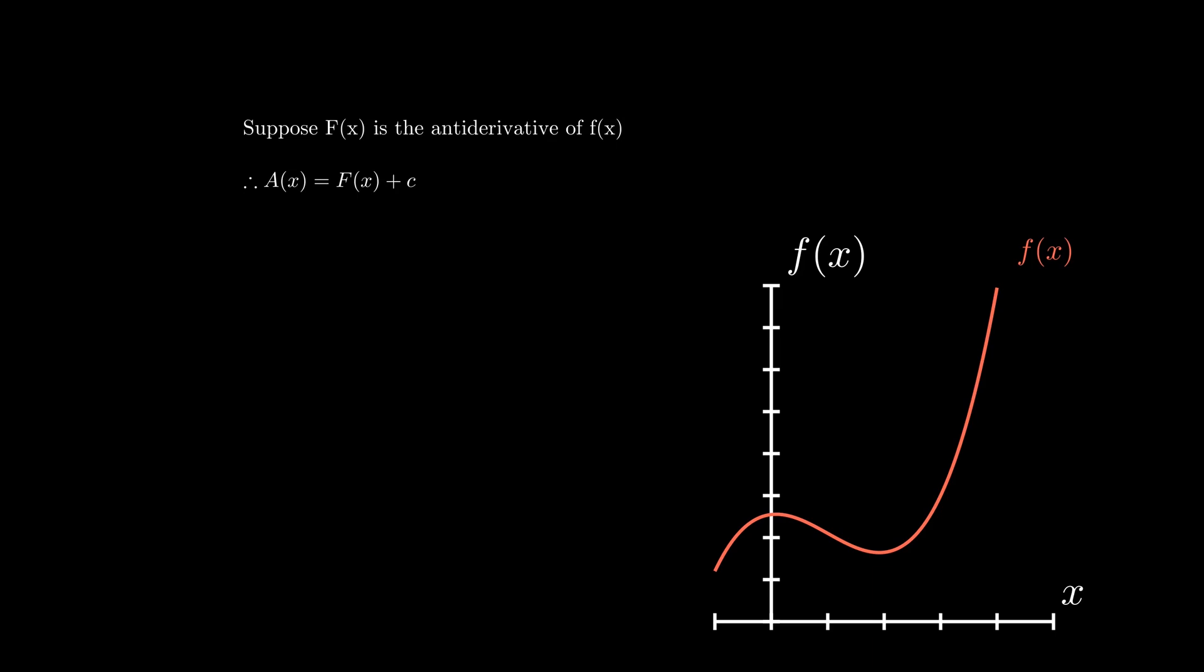If we consider the area under the curve at the point x equals a, there is no area under the curve. Rearranging the expression, we get c is equal to capital F of a. Substituting this into our prior expression for the area, we obtain an expression that reads, the area under the curve is capital F of x minus capital F of a.